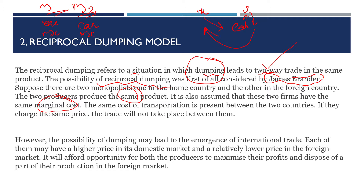Additionally, the same transportation cost is present in both countries. The transportation cost, referred to as TRC, of the home country is equal to the TRC of the foreign country. So the assumptions are: two monopolists, same product, same marginal cost, and same transportation cost.